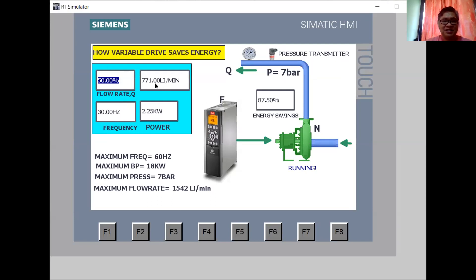At 50%, you can see you have a 30 hertz frequency supplied to the motor by the VFD. You have 771 liters per minute, the flow rate changes, and you are actually using 2.25 kilowatt of the 18 kilowatt power. And then you have an energy saving of 87.50%. This can be put in an HMI, a human machine interface, to see the real-time savings while running. And you can compute this by multiplying the cost of power.